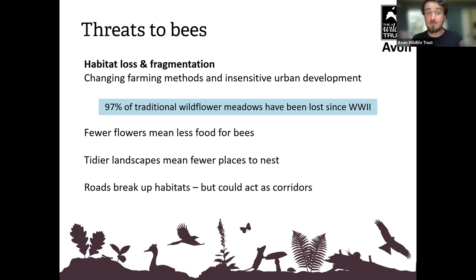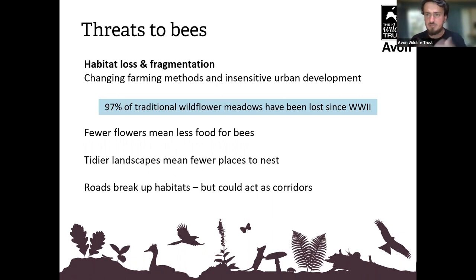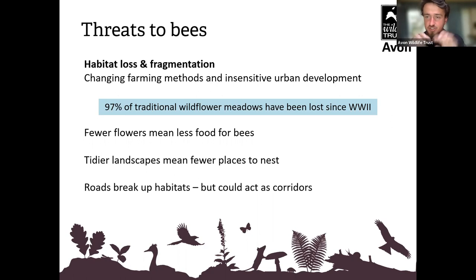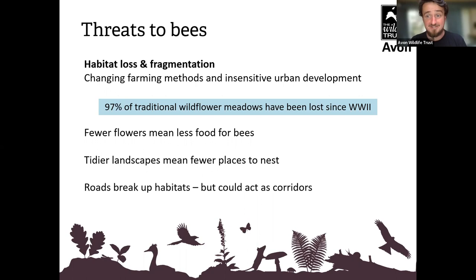Fewer flowers means less food for bees — less nectar. But there's so much more to it. Longer, denser vegetation benefits all sorts of species. Butterflies are a great example — caterpillars feed on grasses, nettles, and thistles, all plants which are now sprayed or pulled out. Having a tidier landscape — short mown lawns, tidy verges, cut back hedges — means fewer places for species to nest and for larvae to feed. Our obsession with tidiness is definitely an issue.